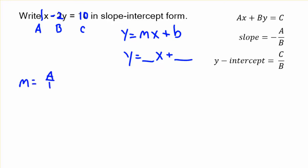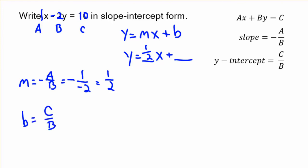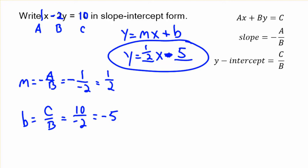The slope is a over b with a sign change — that's 1 over negative 2, which is negative 1 half. For the y-intercept, remember we don't change the sign, just put c over b: 10 over negative 2 is negative 5. So instead of plus, we write minus 5. And that's it — it's that quick. Just remember negative a over b and c over b to make the conversion much easier.